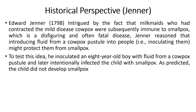There was a man named Edward Jenner in 1798 who was intrigued by the fact that milkmaids who had contracted the mild disease cowpox were subsequently immune to smallpox, which is a disfiguring and often fatal disease. Jenner reasoned that introducing fluids from cowpox pustules into people might protect them from smallpox. He used cowpox vaccines or cowpox viruses to prevent the smallpox disease, reasoning that those infected with cowpox would not be infected by smallpox.